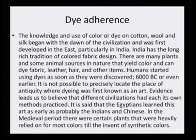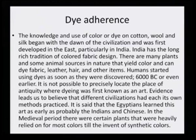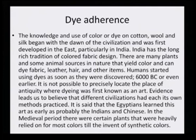The knowledge and use of color or dye on cotton, wool and silk began with the dawn of civilization and was first developed in the east, particularly in India. India has a long rich tradition of colored fabric design. There are many plants and some animal sources in nature that yield color and can dye fabric, leather, hair and other items. Humans started using dyes as soon as they were discovered — 6000 BC or even earlier. It is not possible to precisely locate the place of antiquity where dyeing was first known as an art. Evidence leads us to believe that different civilizations had each its own methods to be practiced.